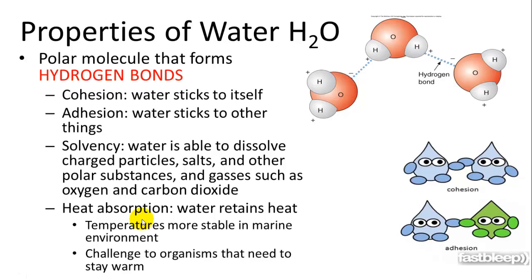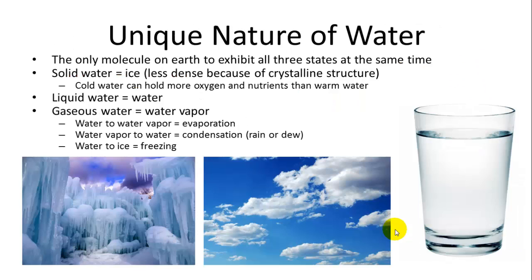Water also absorbs heat very effectively. When water is on your hand and evaporates, it pulls heat away, feeling cold. This can be a challenge for warm-bodied organisms like marine mammals. Water is the only substance on Earth that naturally exists in all three states — ice, liquid, and vapor — and uniquely, it is less dense as a solid, so ice floats on liquid water.